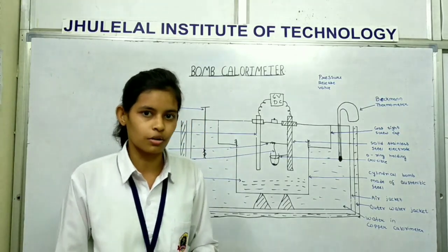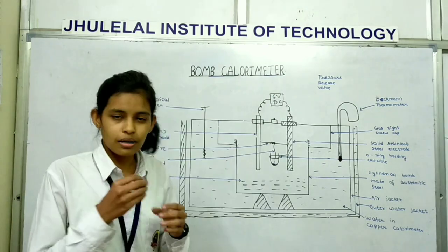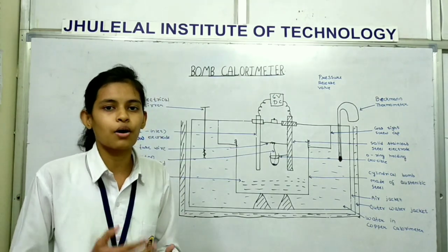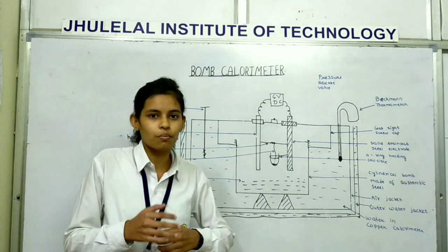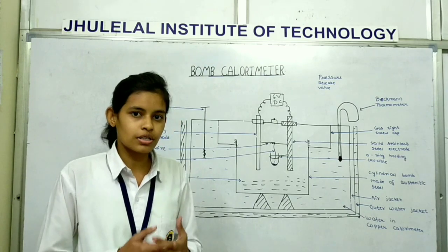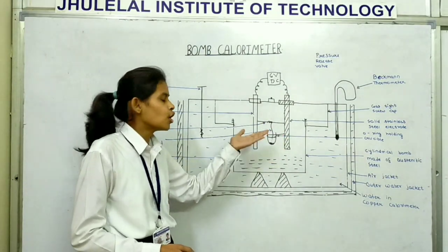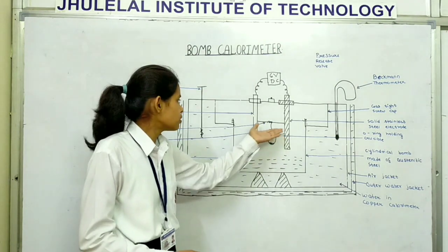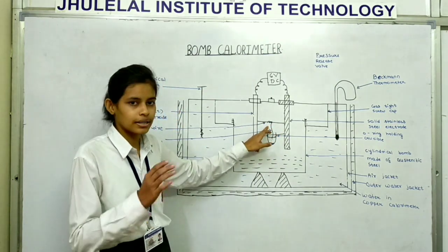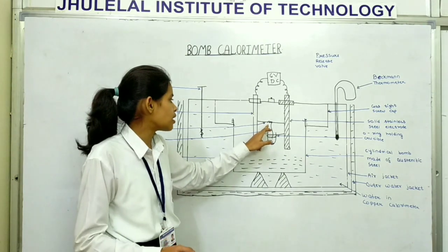The working of bomb calorimeter: We take accurately weighed amount of fuel in the form of pellet in crucible. Nichrome wire is stretched across the two electrodes.